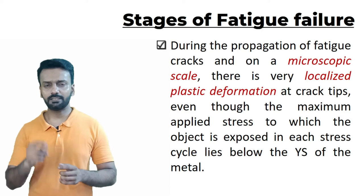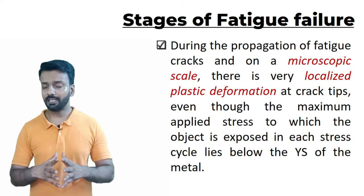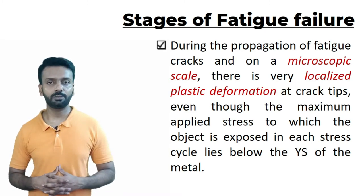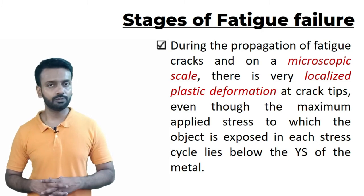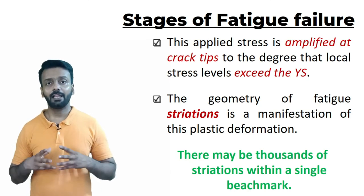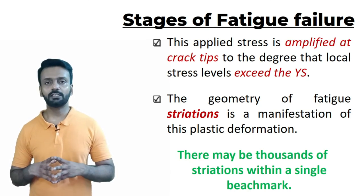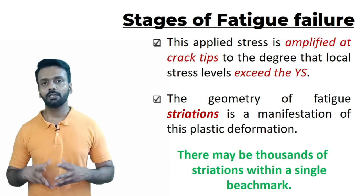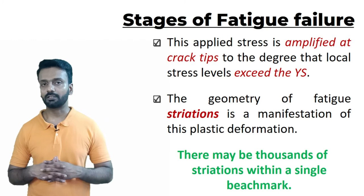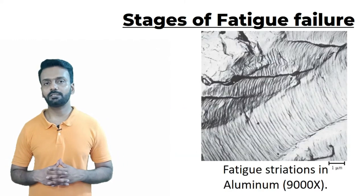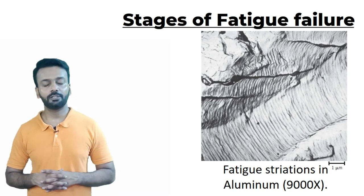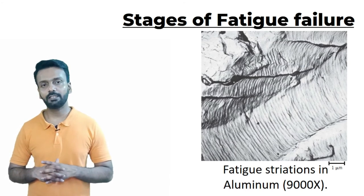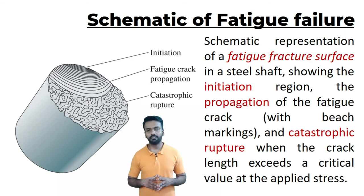During crack propagation, at a microscopic level, localized plastic deformation occurs at a stress well below the yield strength of the material. The applied stress is amplified at the crack tip to the degree that local stress levels exceed the yield strength. Fatigue striations are a manifestation of this plastic deformation. There may be thousands of striations within a single beach mark. In this image, we can see small ridges — fatigue striations in an aluminum component at approximately 9000x magnification.